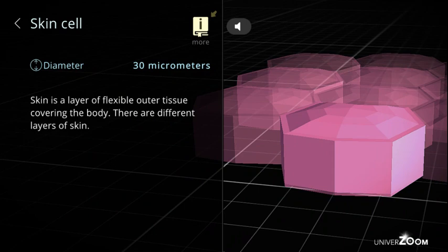Skin cell, diameter: 30 micrometers. Skin is a layer of flexible outer tissue covering the body. There are different layers of skin.